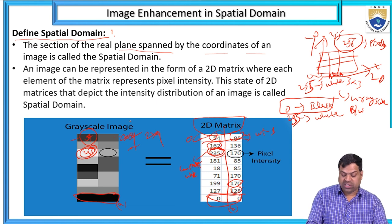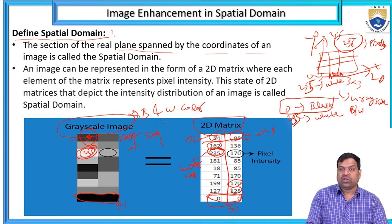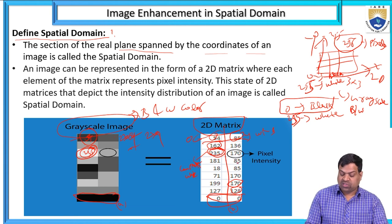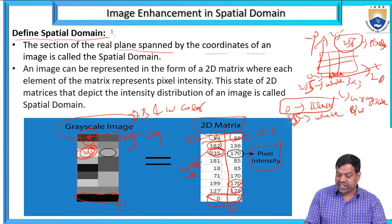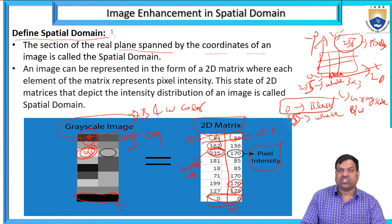Grayscale means a combination of black and white color. When I take the black and white color combination, this is a grayscale image and it is a 2D matrix with x dimension and y dimension. The range of pixel intensity values is 0 to 255 — total 256 intensity values.